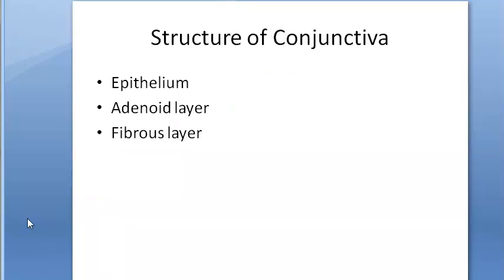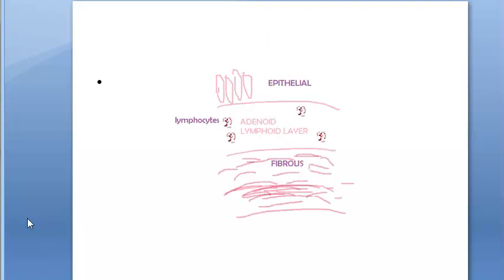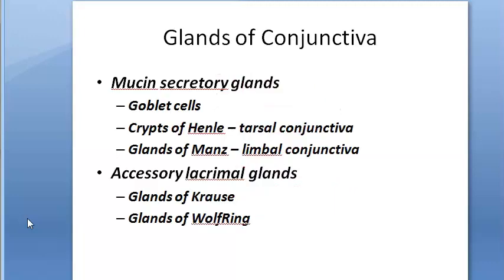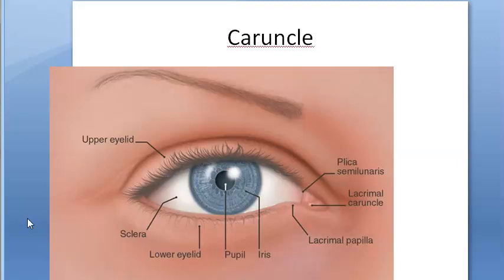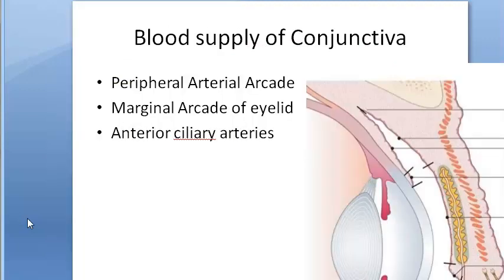We covered the epithelium, the adenoid layer, and the fibrous layer, and how they differ in different locations. Then we saw the glands of conjunctiva, plica semilunaris, and the caruncle. Now we are moving on to blood supply of conjunctiva.